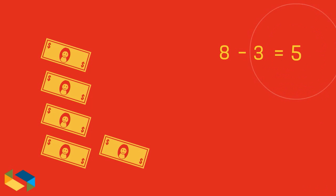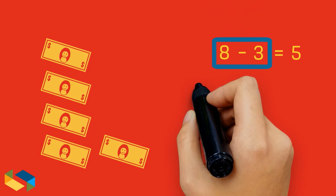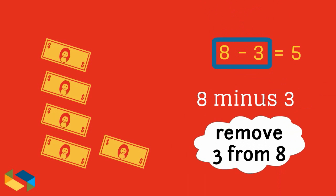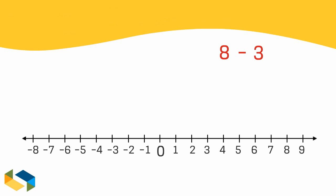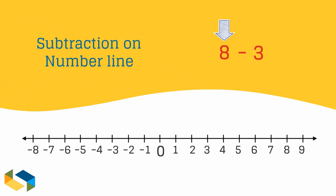What we are left with are five currency bills. The subtraction expression is read as eight minus three, which means to remove three from eight. Here's how this very problem is solved on a number line.